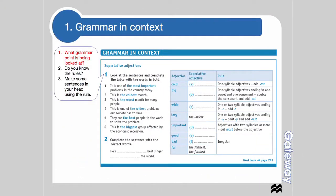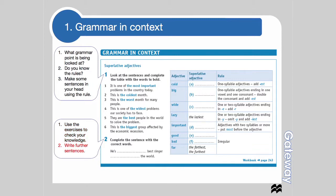Then we need to think about the rules. Are there any rules which are different to those in Italian? Then try to make some sentences using that grammar and put those sentences into context. Use the exercises in the book — they've been written specifically to help you put into practice what you've learned. Finally, it's a good idea to always try and write some extra sentences and check with your teacher or somebody who knows the language if what you've written is correct.